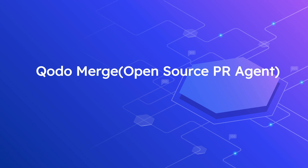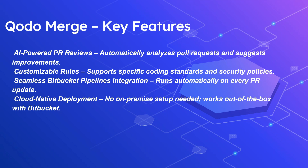Now let us quickly look at the second approach: Qodo Merge, the open-source PR agent. Qodo was previously known as Codium. Qodo Merge is an open-source AI-powered pull request reviewer that integrates with Bitbucket, GitHub, and GitLab. It automates PR reviews by analyzing code changes, enforcing coding standards, and suggesting fixes. Key features include AI-powered PR reviews that automatically analyze pull requests and suggest improvements, and customizable rules that support specific coding standards and security policies.